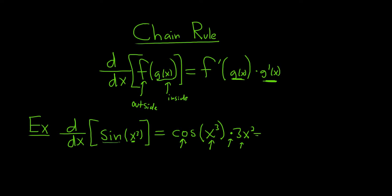It's beautiful stuff. You can put the 3x squared in the front, so it's 3x squared times cosine of x cubed.